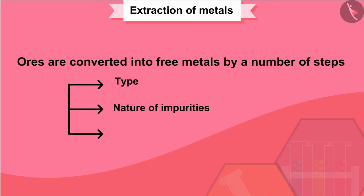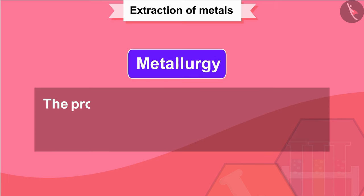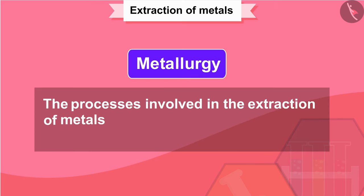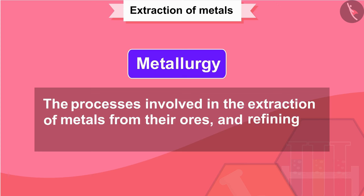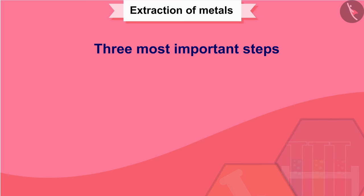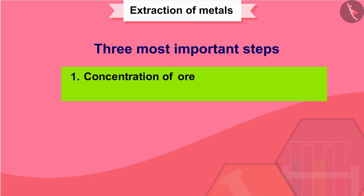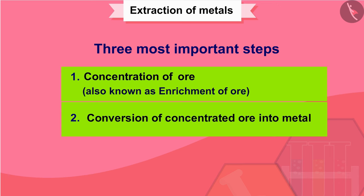The steps depend on the nature of the impurities and reactivity of the metal to be extracted. The processes involved in the extraction of metals from their ores and refining are known as metallurgy. It involves three most important steps: one, concentration of ore, also known as enrichment of ore; two, conversion of concentrated ore into metal; three, refining, that is purification of metal.